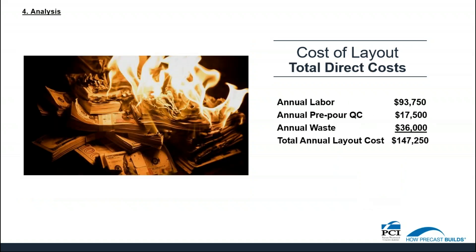To sum up the total annual cost of layout: annual labor costs of $93,750, an annual pre-pour quality control cost of $17,500, and an annual waste and rework cost of $36,000, for a total annual layout cost of $147,250 per year. Now that the cost is determined, let's look at a viability calculator to determine payback and return on investment.